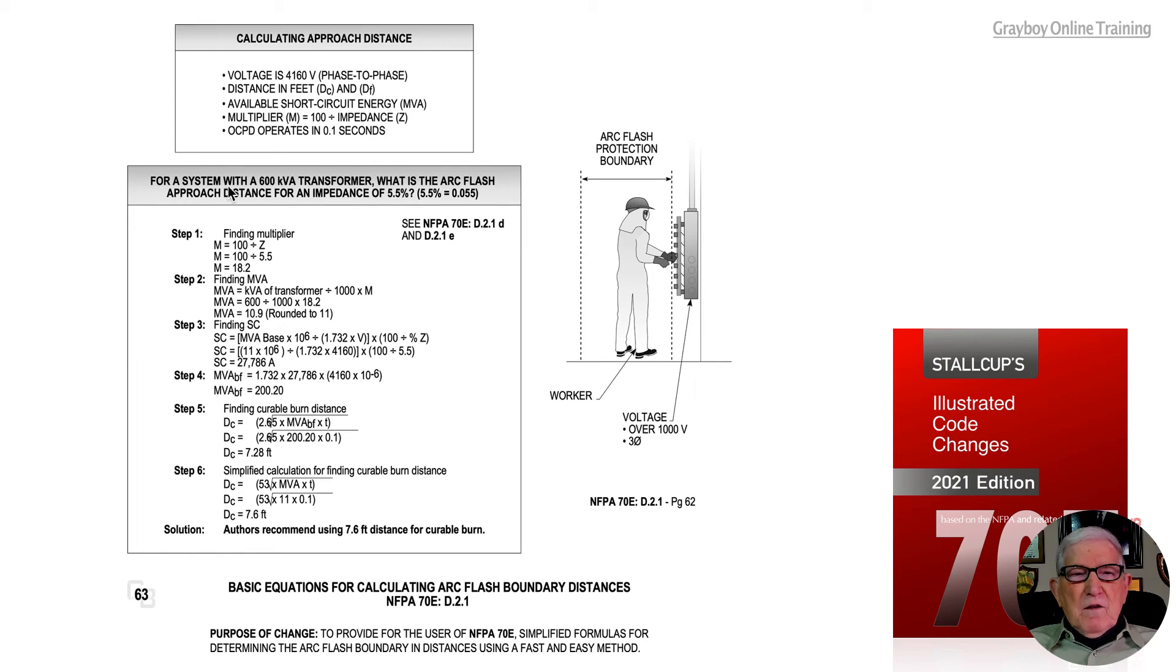For a system equipped with a 600 kVA transformer, what is the arc flash approach distance for an impedance of 5.5 percent? When that's converted it's 0.055. Now to determine step one, we're going to go through it in accordance with Annex D.2.1d and D.2.1e.